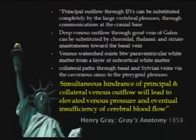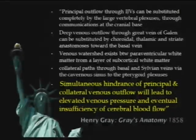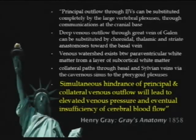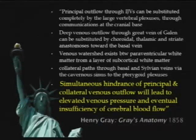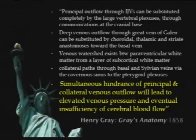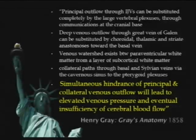The deep venous outflow through the great vein of Galen can be substituted by choroidal, thalamic, and striate anastomosis towards the basal vein. A venous watershed exists between the paraventricular white matter and a layer of the subcortical white matter. Gray wrote in 1858, as a 32-year-old man shortly before he died of smallpox, that simultaneous hindrance of principal and collateral venous outflow will lead to elevated venous pressure and eventual insufficiency of cerebral blood flow. And we ignored that.